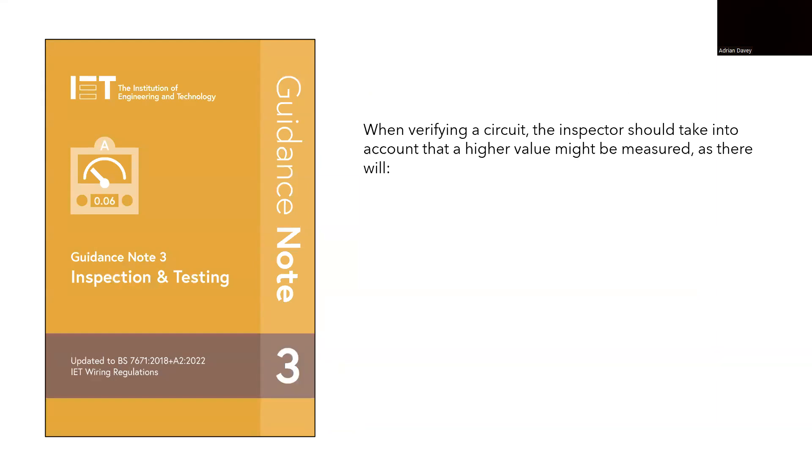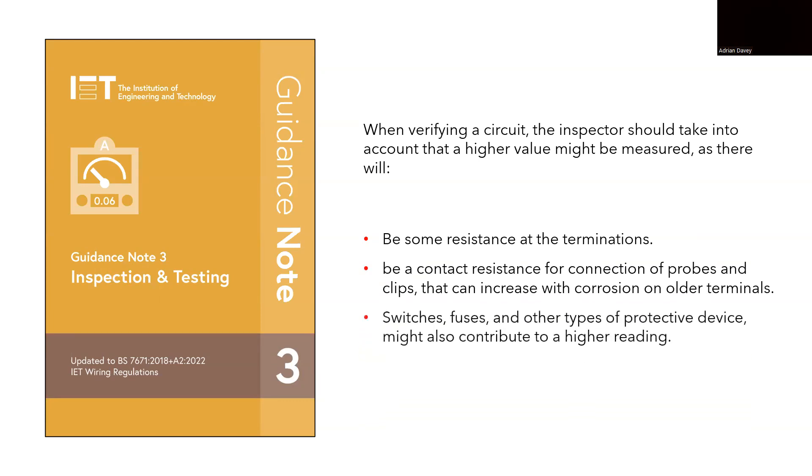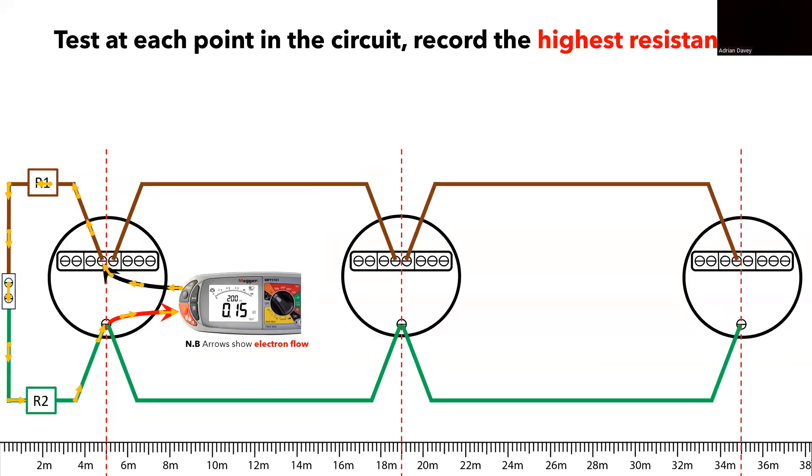The IET's guidance note 3 is another book I recommend purchasing if you are involved in inspecting and testing electrical installations. Since we might obtain a value higher on our MFT than the calculated value, it offers the following guidance. The inspector should consider potential higher measured values as a result from resistances at the termination within the circuit, contact resistance on the test probes from the MFT, and the presence of switches, fuses and other elements within the circuit that are not part of the cable. Since the value we measured in our MFT closely matches or is similar to what we calculated, we can conclude that our circuit is well connected at this point and utilizes the appropriate cable size.